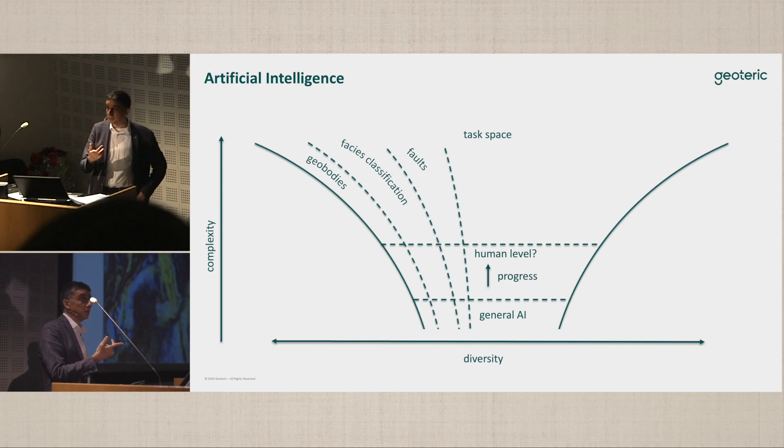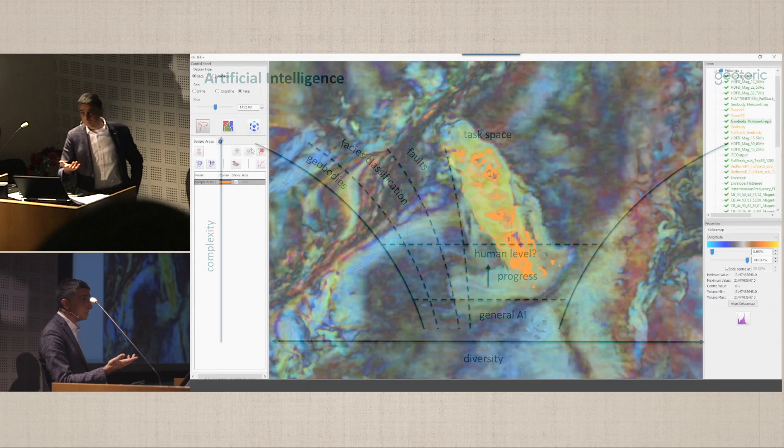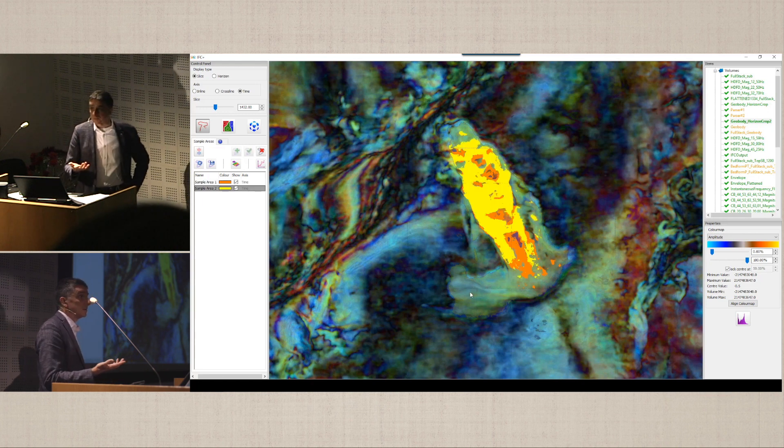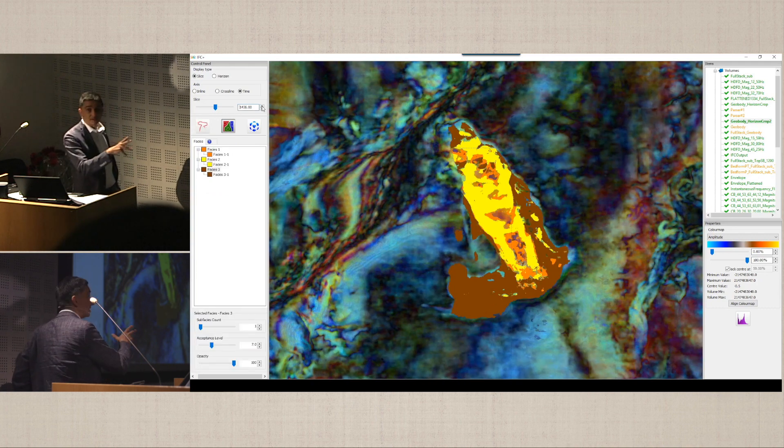Let's start with classification. Classification is a problem, and in our solution, it's a semi-supervised classification. The interpreter will apply their knowledge and say, this is facies one, that's facies two.